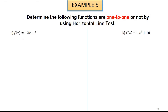We want to determine whether the following functions are one-to-one or not by using the horizontal line test. The first one is f(x) = -2x - 3. This is a linear function. To draw the graph of a linear function, you need to find two points and then connect them.